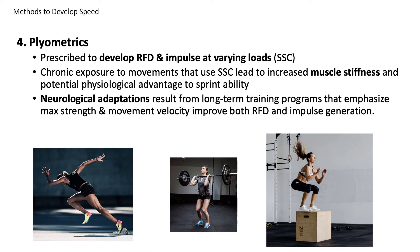The fourth method of developing speed is through plyometric training — all about rate of force development and impulse at varying loads through activation of the stretch shortening cycle. One key chronic adaptation to plyometrics is the development of muscle stiffness, which can increase sprint ability. Another long-term adaptation is neurological: improved speed of neural transmission, which improves the rate of force development and impulse.